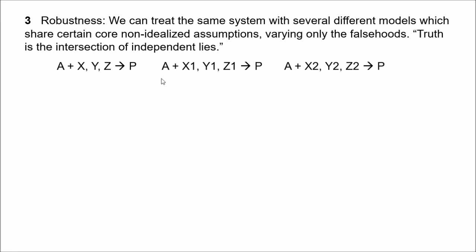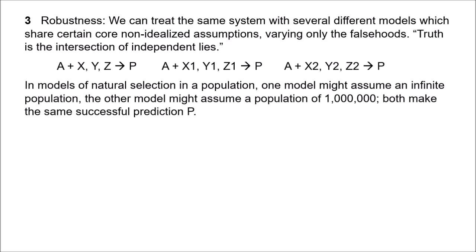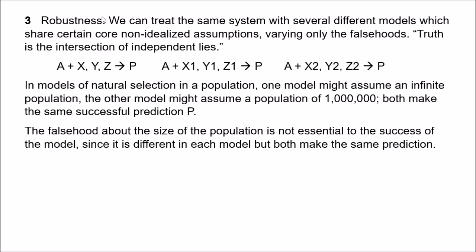Richard Levins has a nice quote which sums up the basic idea here: 'Truth is the intersection of independent lies.' For example in models of natural selection, if we're looking at how the fitness of a particular genotype will affect its distribution in the population over time, one model might assume an infinite population — so in this case there would be no genetic drift. Obviously this is an idealisation. But we could create another model which assumes a population of say one million individuals, which makes the same or at least a sufficiently similar prediction. This may also be an idealisation, since the real population may have more or fewer than one million individuals. But what this is supposed to show is that the falsehood about the size of the population is not really relevant to the success of the model, because a different model making a different assumption about the size of the population gives the same prediction.